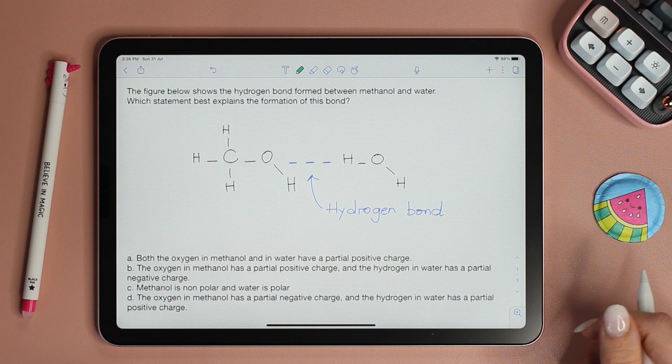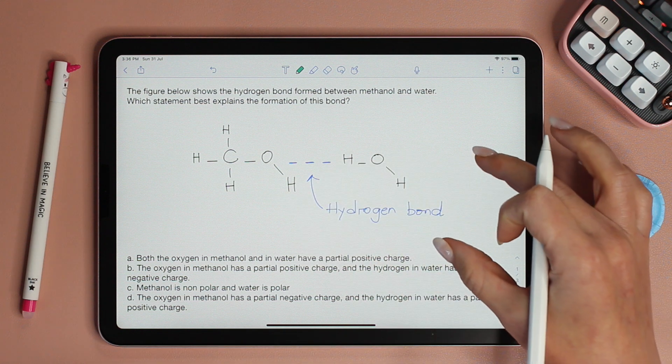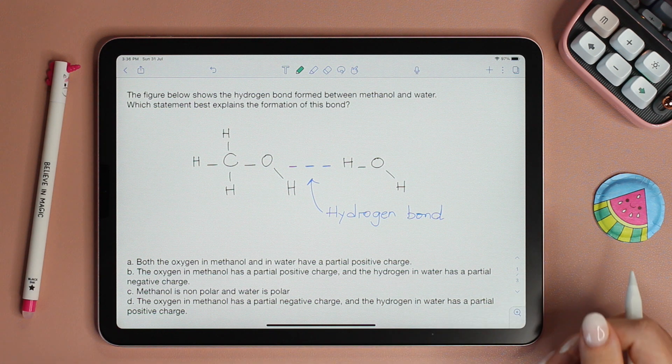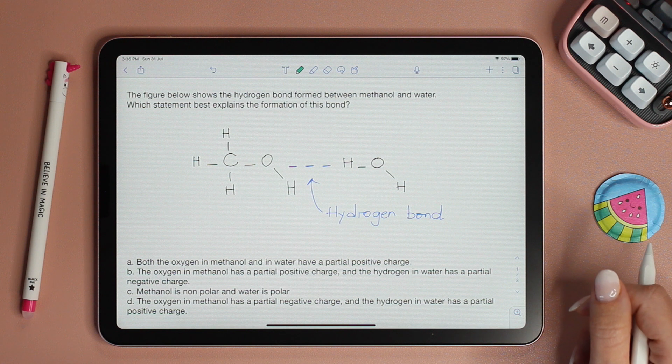Let's read the question together. The figure below shows the hydrogen bond formed between methanol and water. Which statement best explains the formation of this bond?